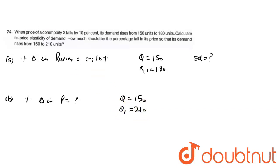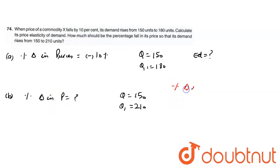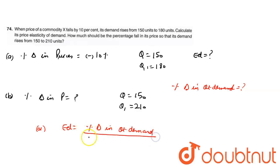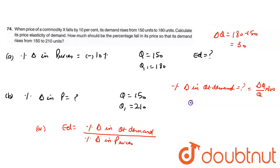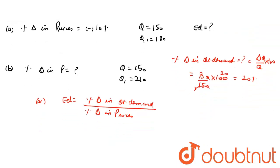Part A: Elasticity of demand equals percentage change in quantity demanded upon percentage change in prices. Percentage change in quantity demanded equals delta Q upon Q into 100. So delta Q equals 180 minus 150, which is 30. So 30 upon 150 into 100 — zeros cancel — giving us 20%. So percentage change in quantity demanded is 20%.